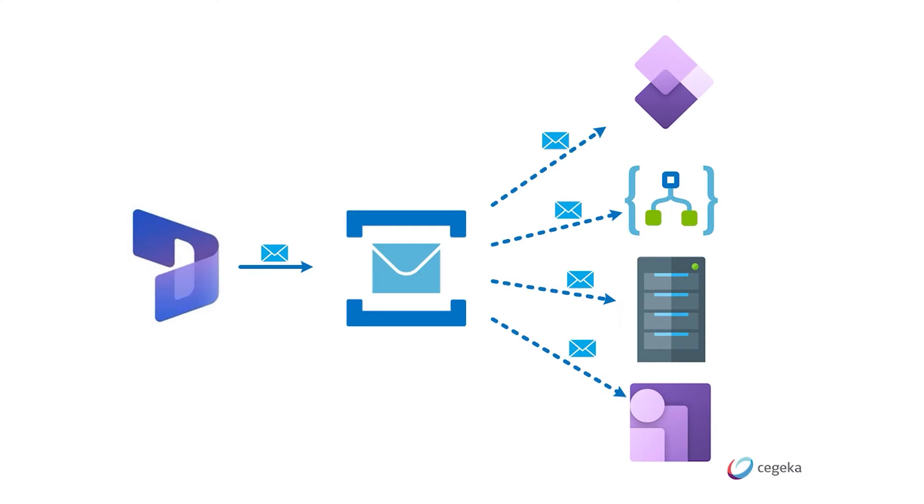This way of integrating is point-to-point, which means that two applications are tied together. In application landscapes where multiple applications need to receive information from a source system, we generally like to use a centralized hub where all information from the source system is posted, and target systems that need this information can simply subscribe to this hub, read the information, and process it. Within DualWrite, this is not possible.